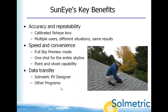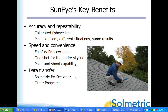Key SunEye benefits include excellent accuracy and repeatability through a calibrated lens, so multiple users in different situations get very close to the same results. The speed and convenience of the system — measuring down at shoe-top level or up to 18 feet with the extension kit — makes capturing skylines quick, with easy data transfer to other programs.